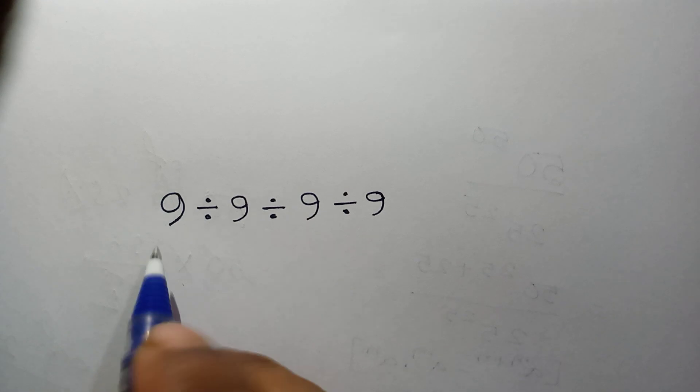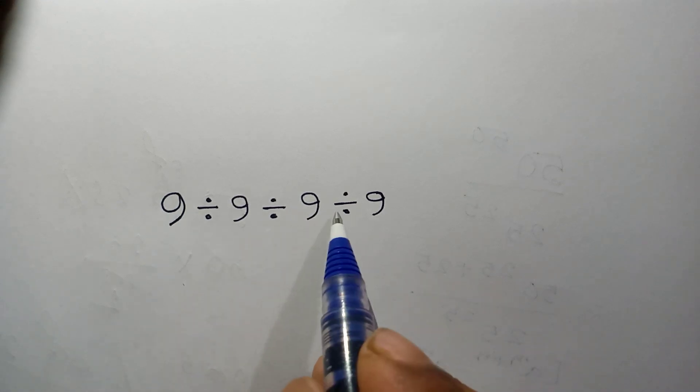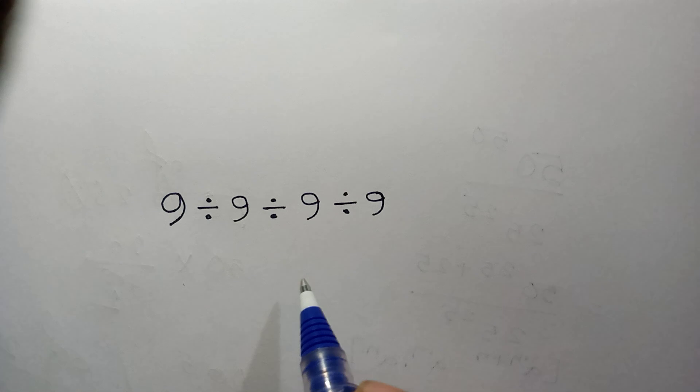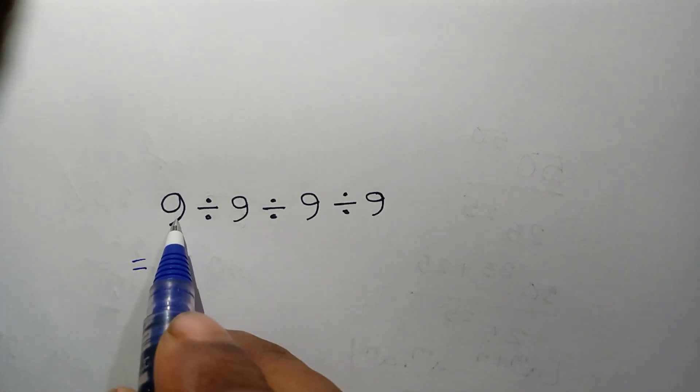Here we have 9 divided by 9 divided by 9 divided by 9. Firstly, this 9 divided by 9, which is 1.